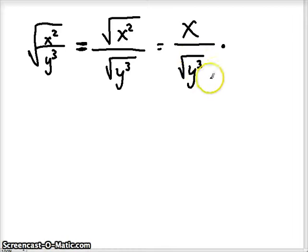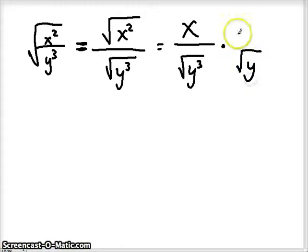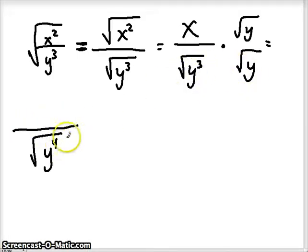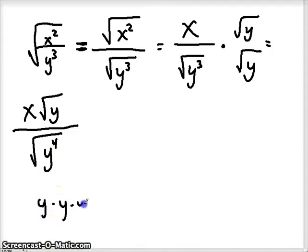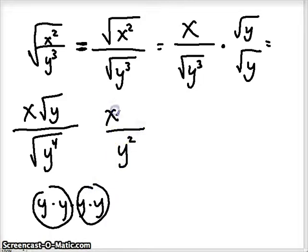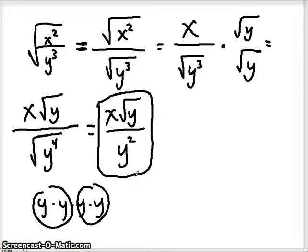So I'm going to have to rationalize — I want to get rid of this radical. I'm taking the square root of a cube, so if I multiply by the square root of y to the 1st power, that gives me y to the 4th under the radical on the bottom. Multiplying those together I get y to the 4th on the bottom, and on top I get x times the square root of y. Now I can take the square root of y to the 4th — that's y times y times y times y, two pairs — so we get y squared on the bottom. We still have x times the square root of y on top. We don't have a radical on the bottom anymore, so that's our most simplified form.